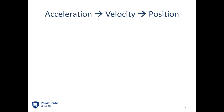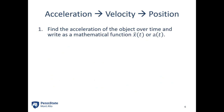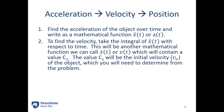Going in the other direction — say I start with the acceleration function and want to find velocity and position — I need to do the opposite of a derivative, which is an integral. Starting with my mathematical function for acceleration, x-double-dot of t or a of t, to find velocity I take the integral. For example, the integral of 2 would be 2t, but we need to remember the constant of integration. So it's 2t plus c, where c is the initial velocity — the velocity at time zero — which you determine from details given in the problem.